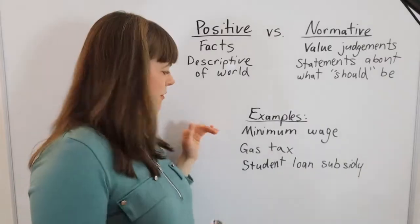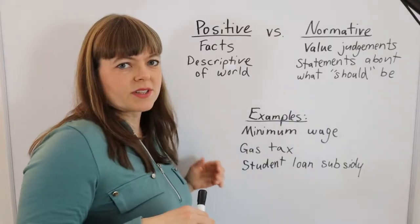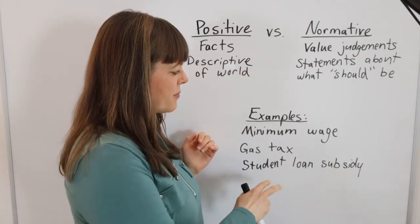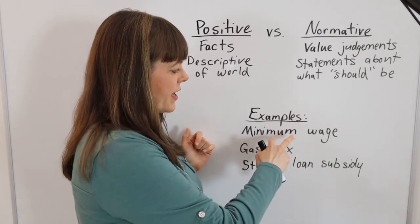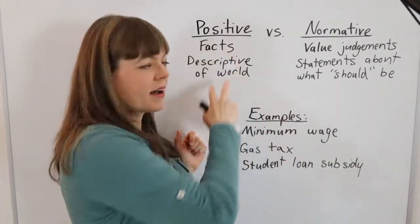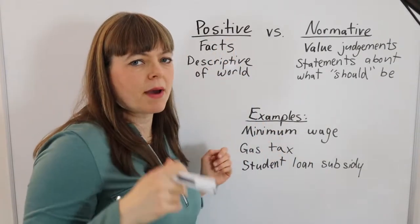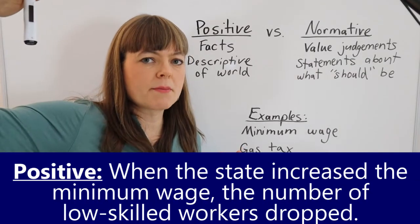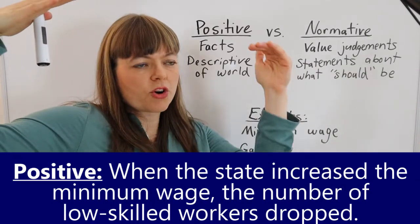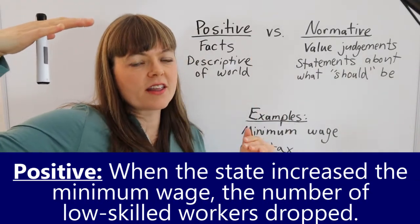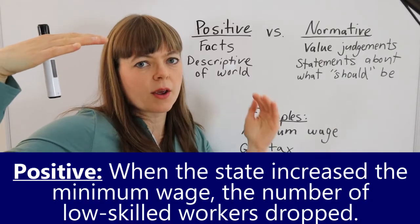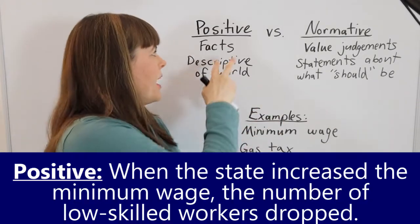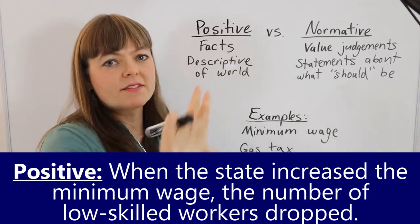Let's go through a few examples relating to policy changes that economists might consider. If we're thinking about the minimum wage, a positive statement might be: when this state increased the minimum wage, the number of workers hired in the low-skilled worker category went down. If that happened, that would be a positive statement.